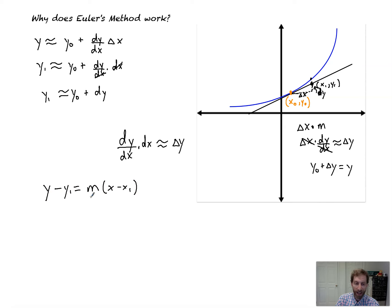So point slope form is y minus y1 equals m times x minus x1. Well, in our case, m is dy dx. And x minus x1, that's a change in x. That's literally this minus that. That's your delta x. Look what's happening here. And that's equal to y minus,